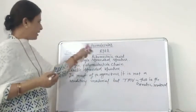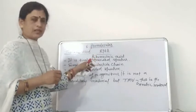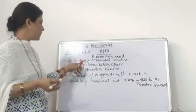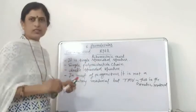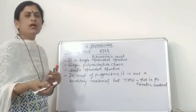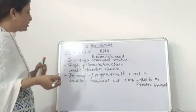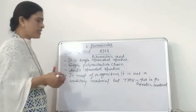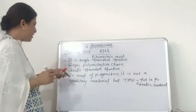RNA has a single-stranded structure. A single polynucleotide chain is present, in which the number of nucleotides are joined with each other with the help of a phosphodiester linkage or bonds.